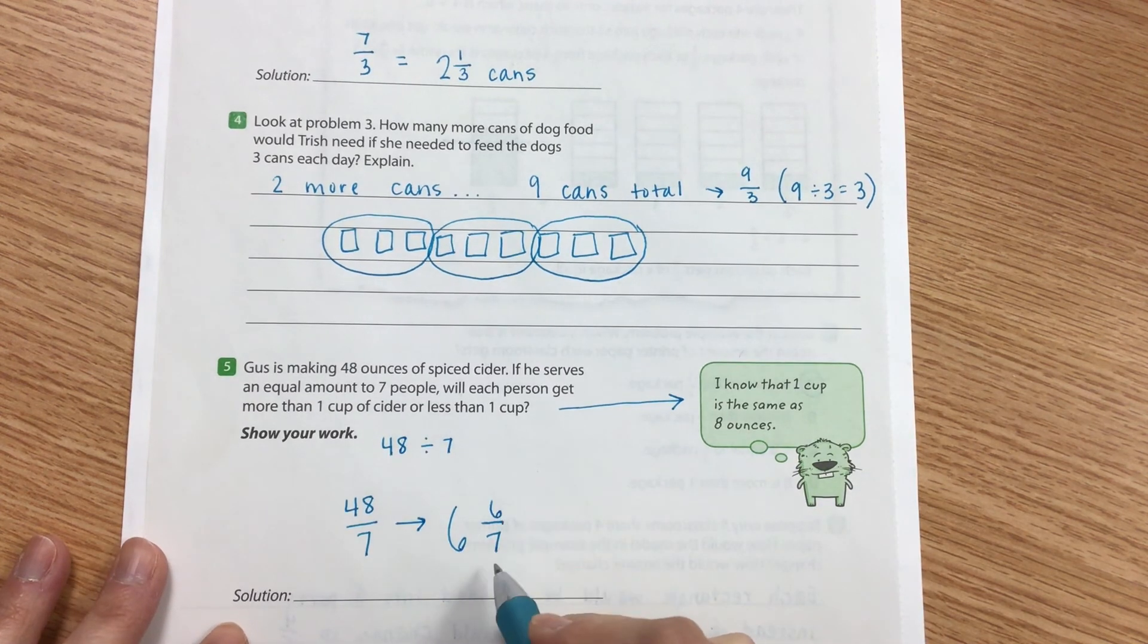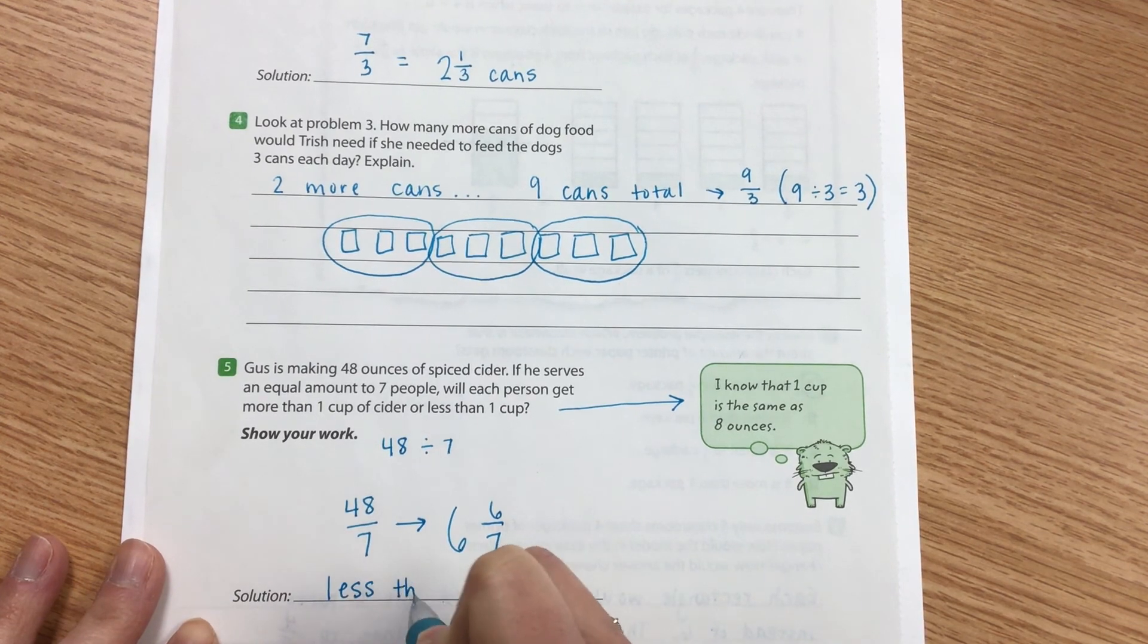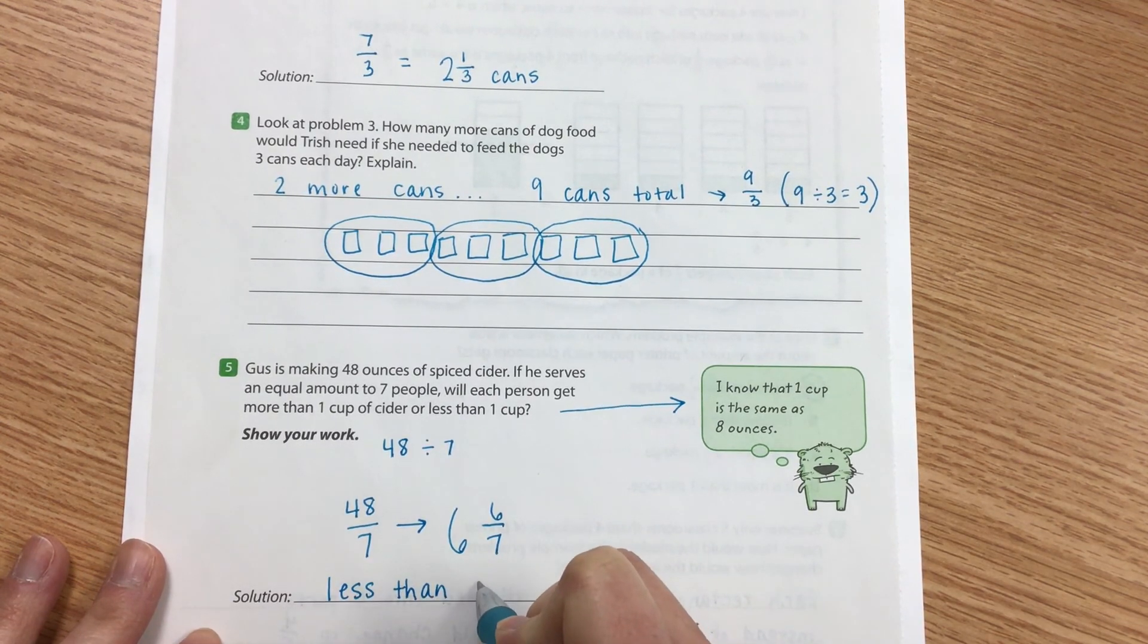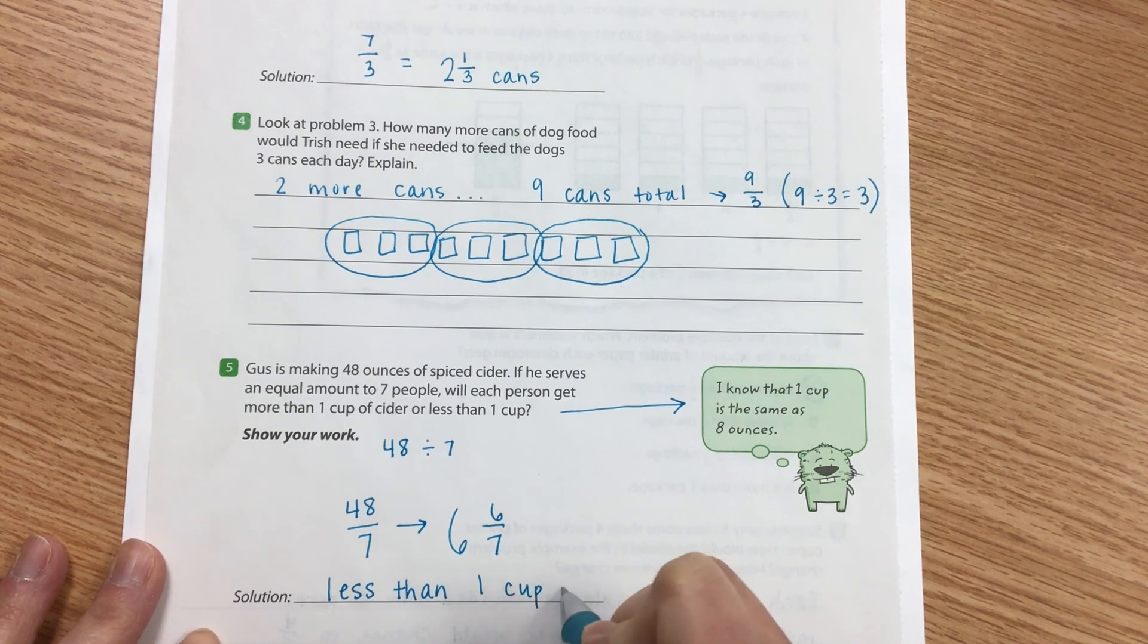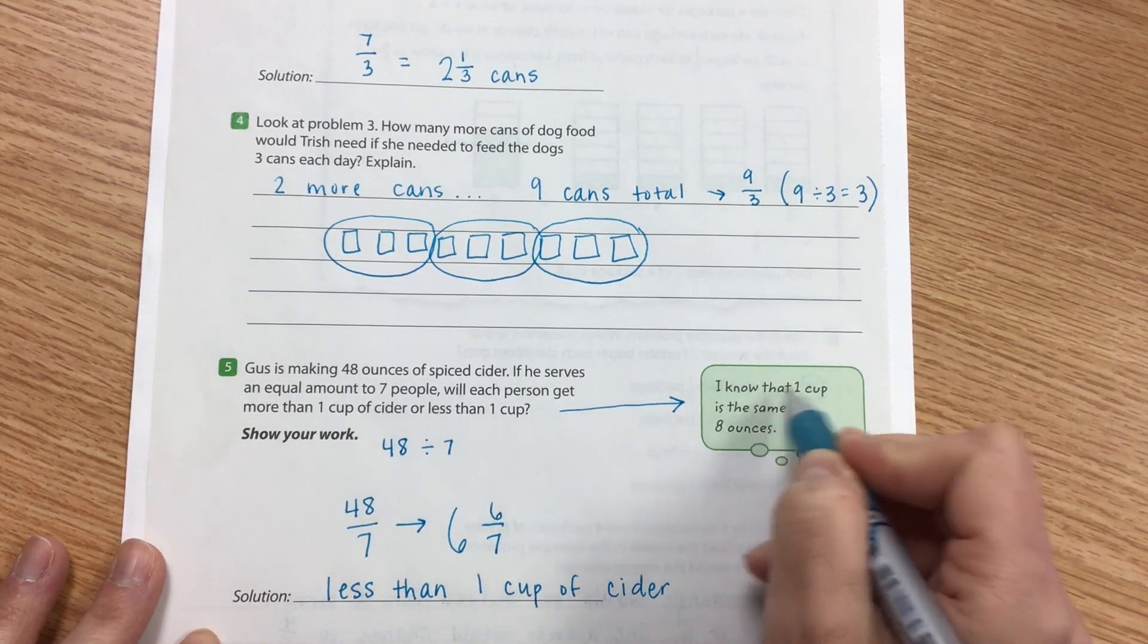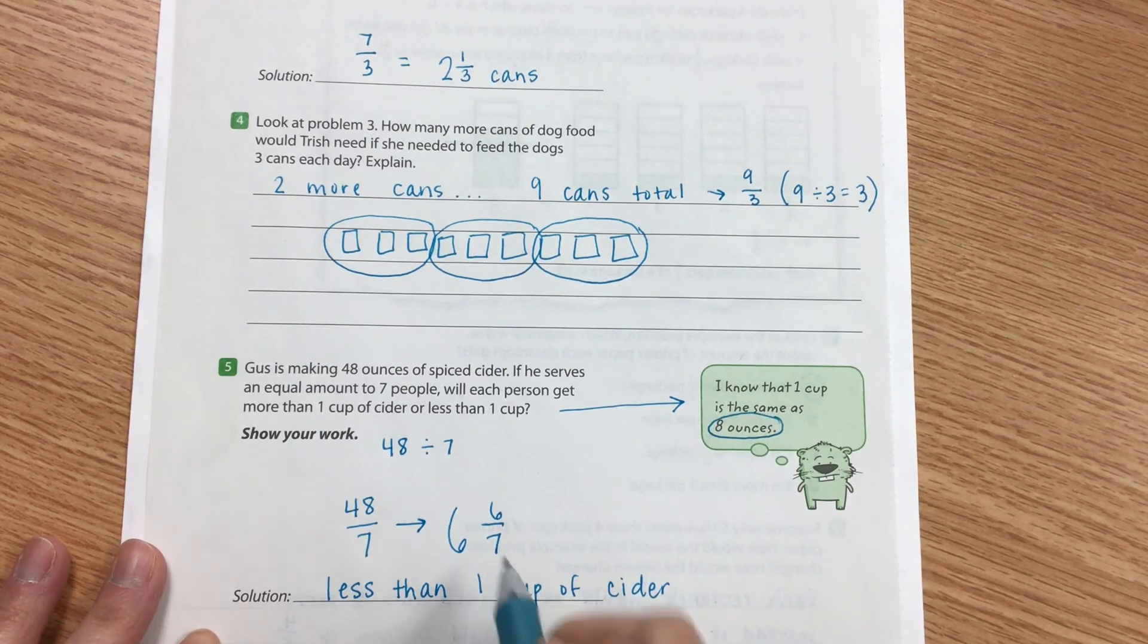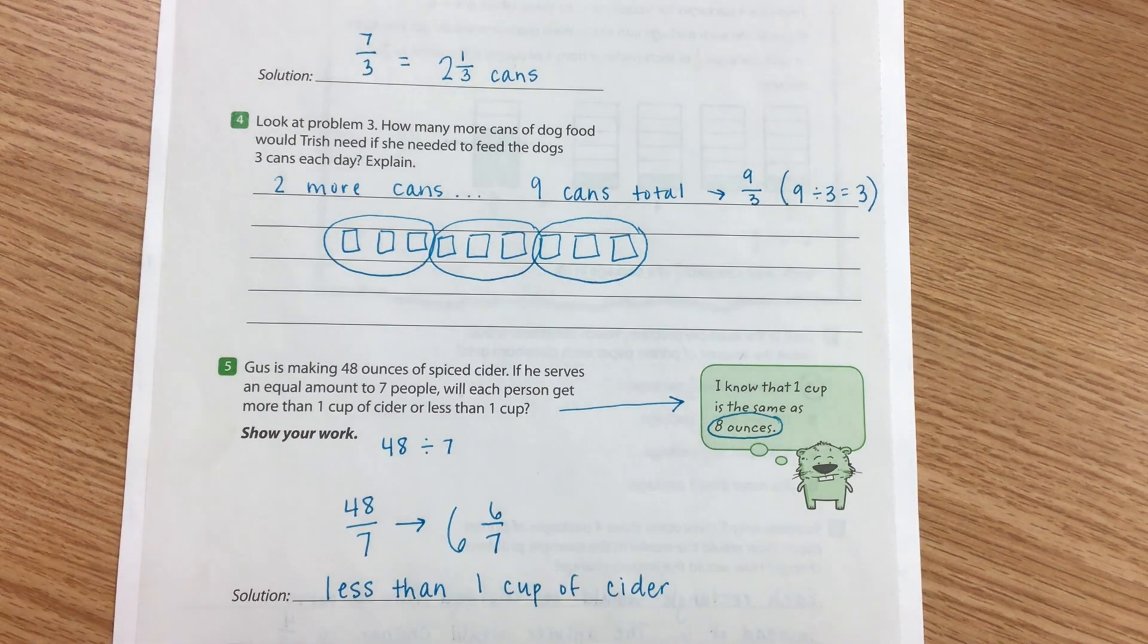So six and six sevenths is actually less than one cup of cider because remember one cup of cider is the same as eight ounces and we got six and six sevenths. So Gus is serving less than one cup of cider to each of his guests.